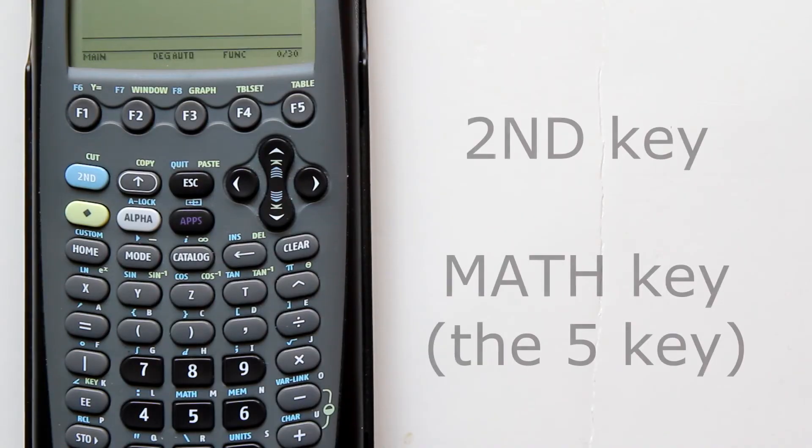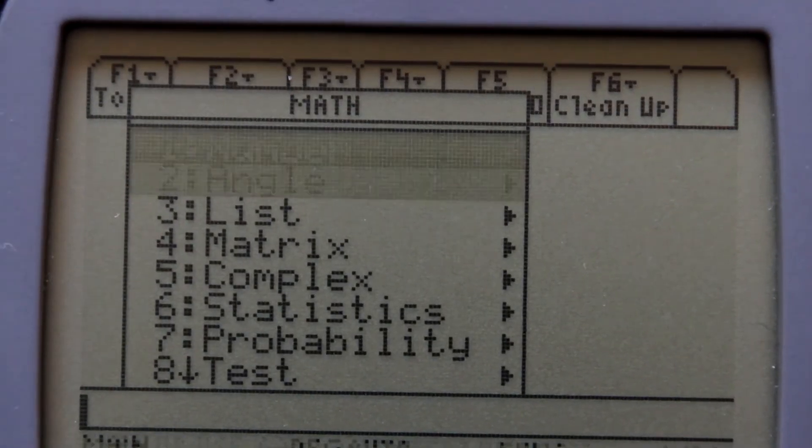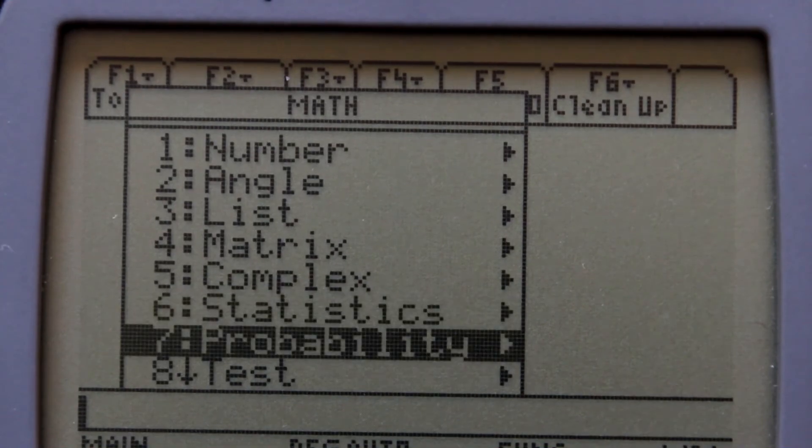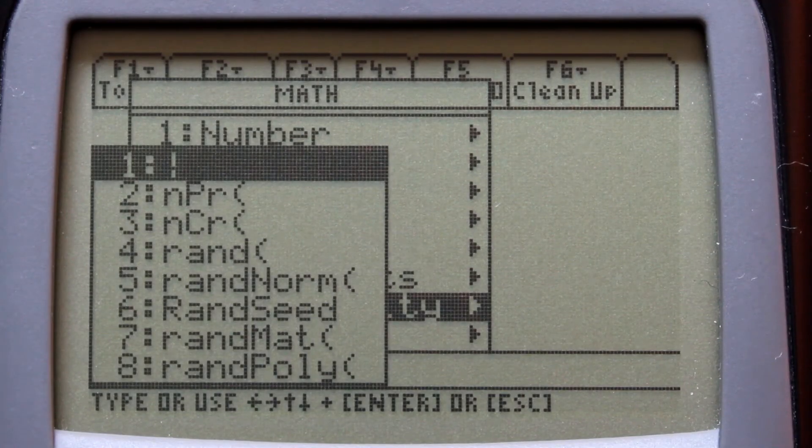To solve on the TI-89 Calculator, go to 2nd, Math (Math is the 5 key). Choose number 7, probability. And choose number 3, n-c-r.